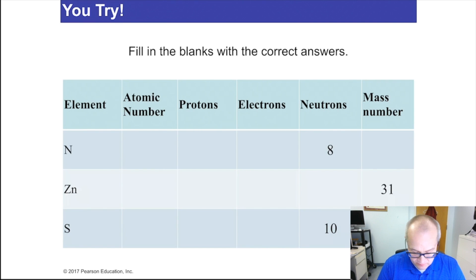Here's another question. You're going to do the same thing we just did, only you're going to fill in this table now. Pause the video and figure everything out. It's really not that hard. Welcome back. I don't know the atomic numbers of these things, so I'm just going to look them up. The atomic number of nitrogen is 7, atomic number of zinc is 30, atomic number of sulfur is 16.